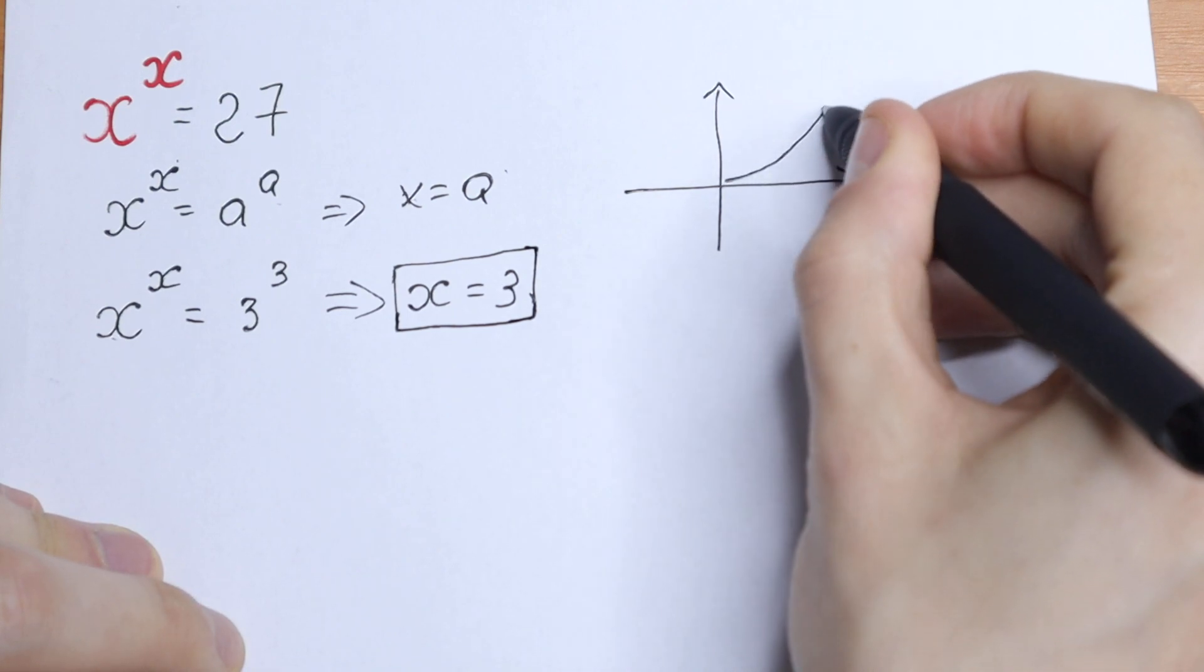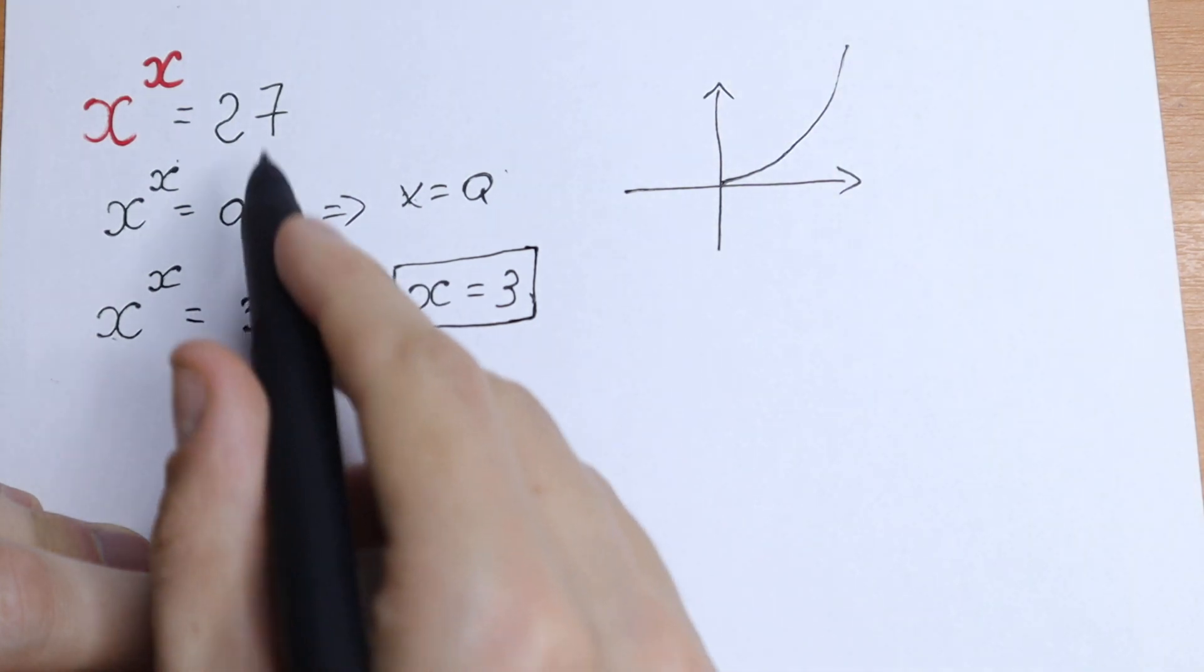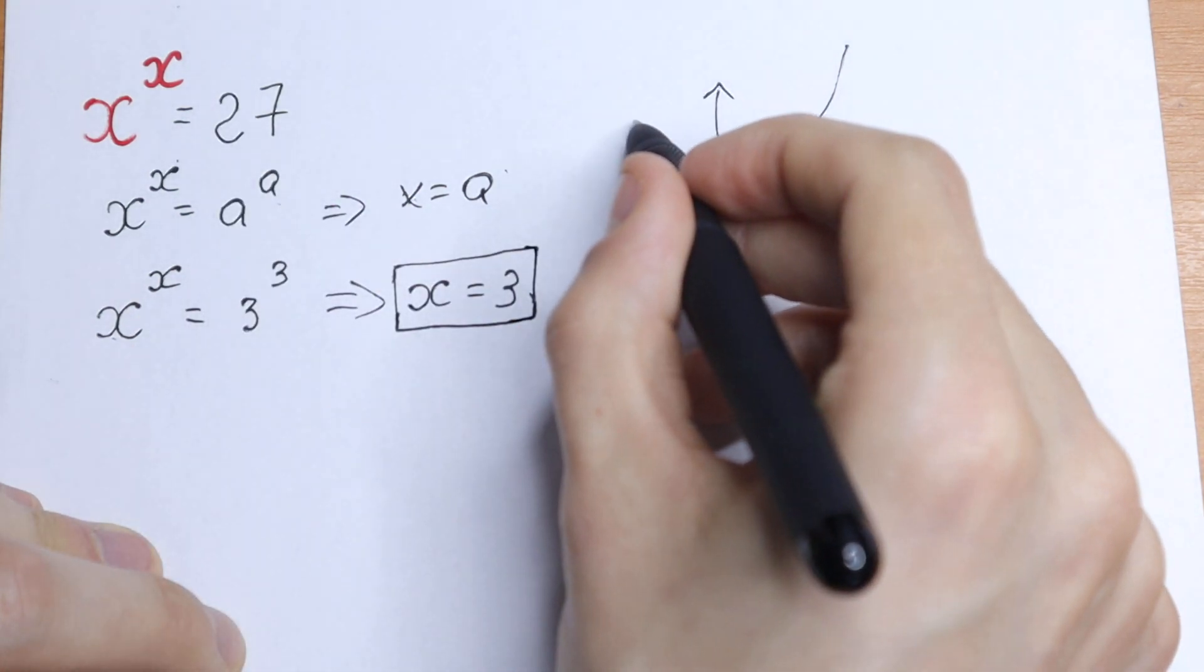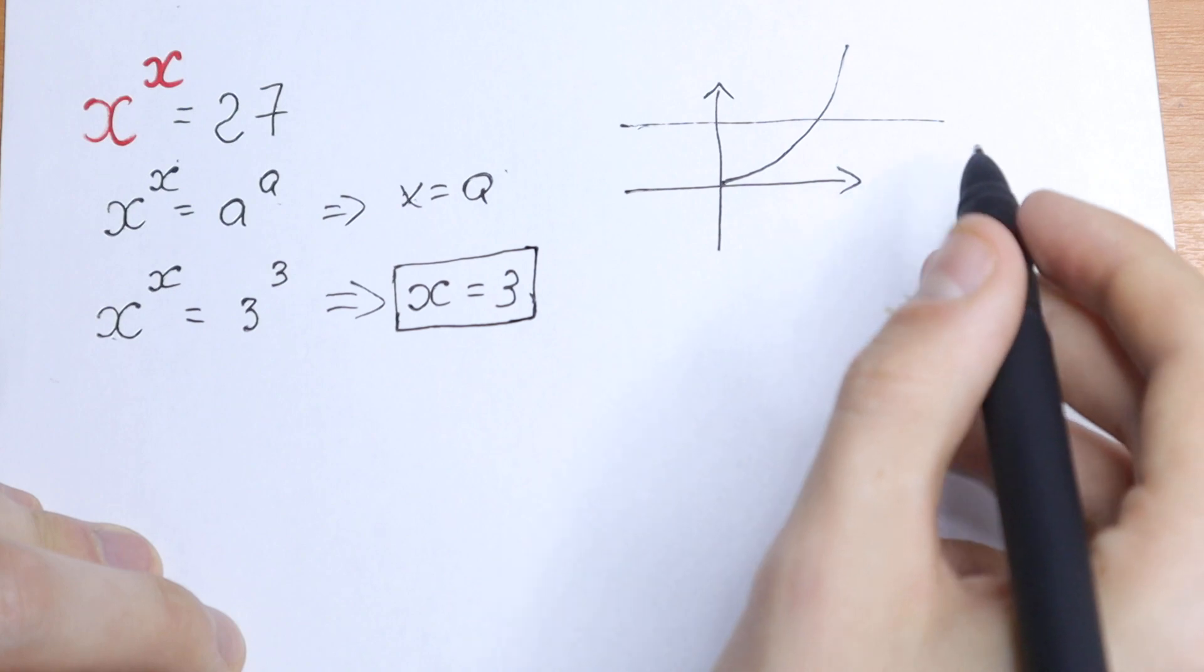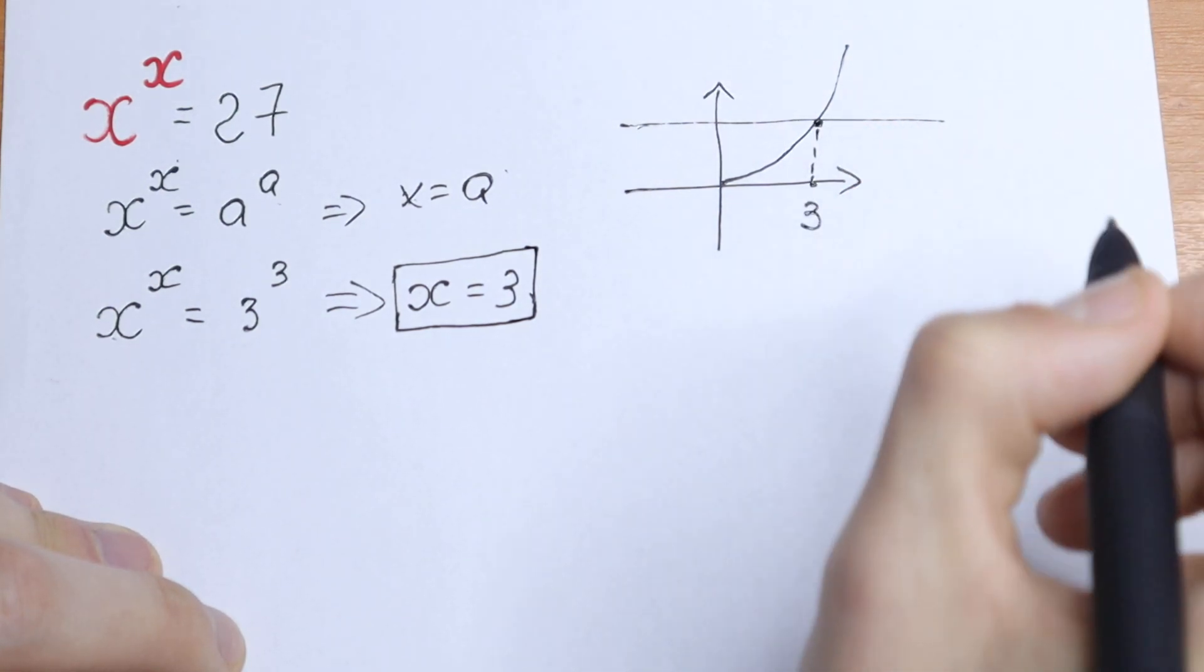x to the power x looks like that. And we'll have a constant on the right, we'll have 27, so this looks like a constant. As a result we'll have one and only solution, and right here will be our 3.